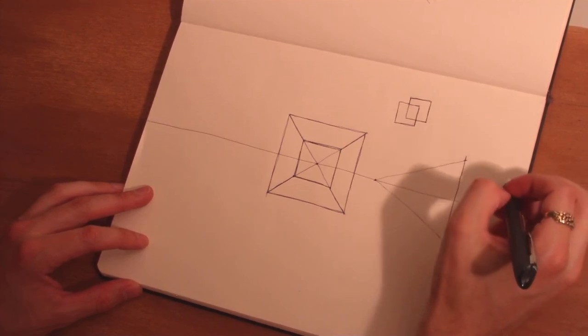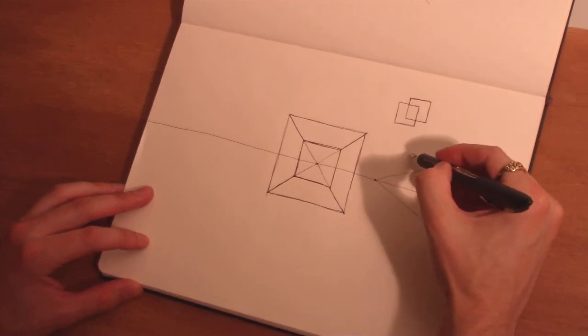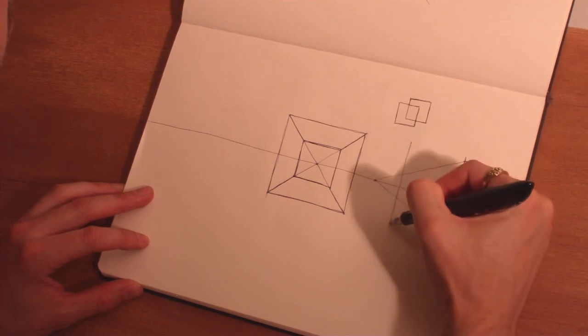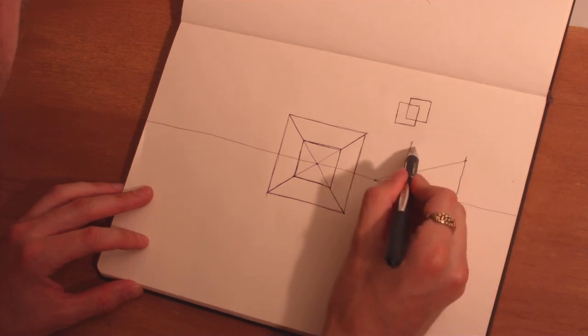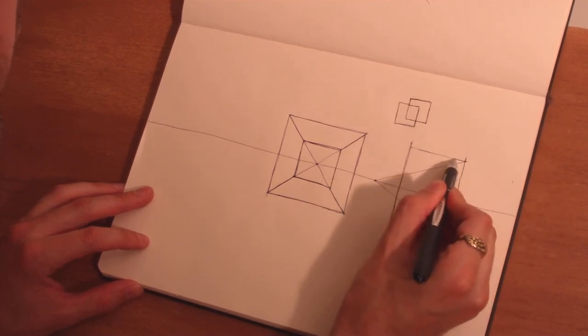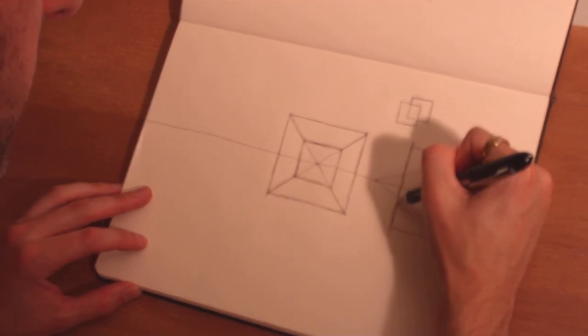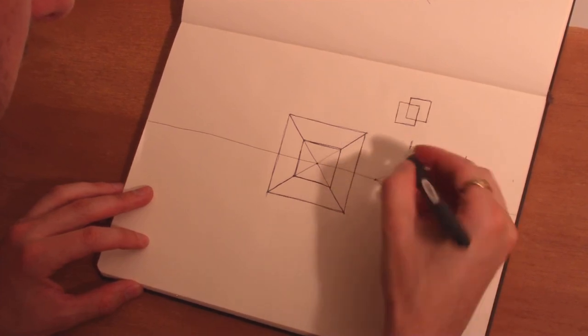So now what we're going to do is pick another vertical, and we're going to draw the face of the rectangle right here. And then at these two points, we're going to draw them back to the horizon line.